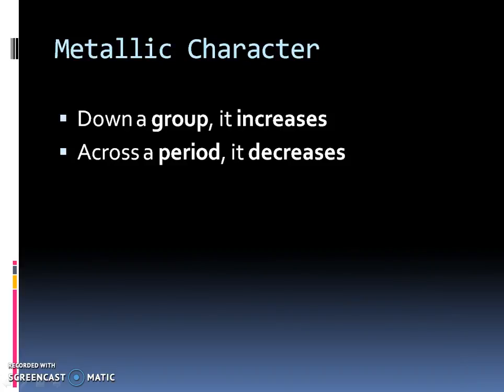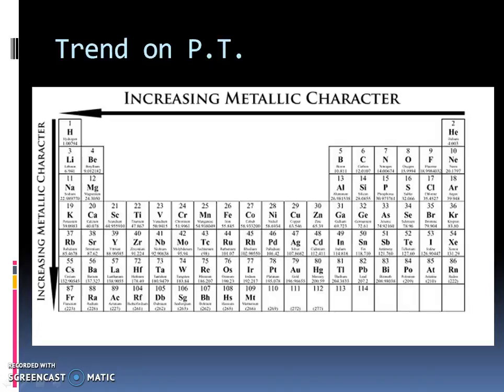So metallic characteristic, this you should be able to get right away, that you go down a group, the metallic character is going to increase, and across the period, it decreases. So if we go from left to right across the periodic table, we go from metals to metalloids to nonmetals. So that trend should make sense. We're going from left to right across the period, we actually decrease in metallic characteristic.